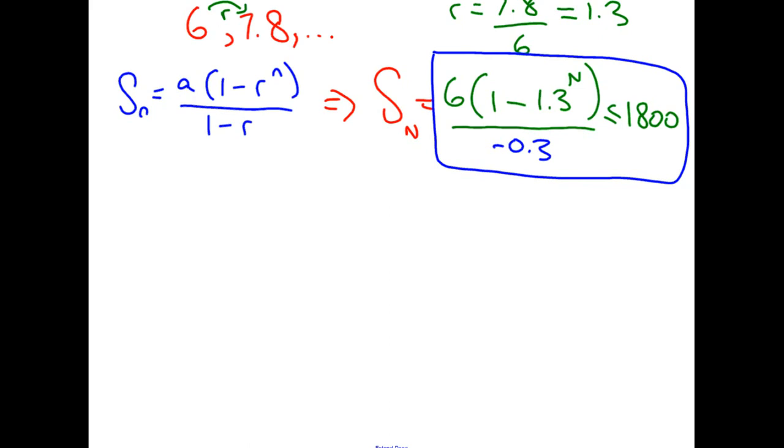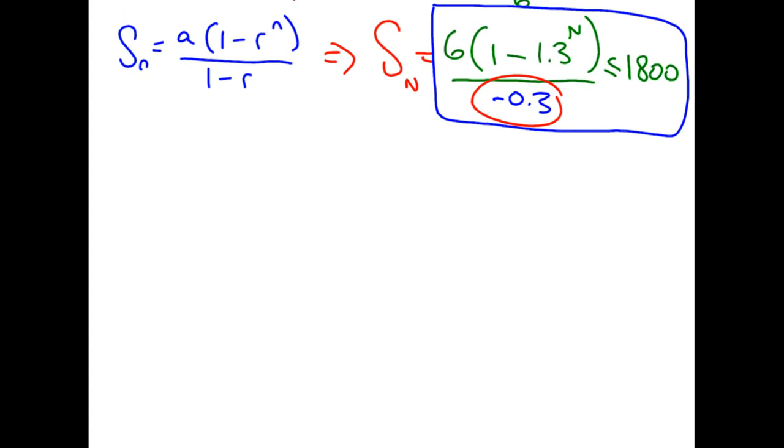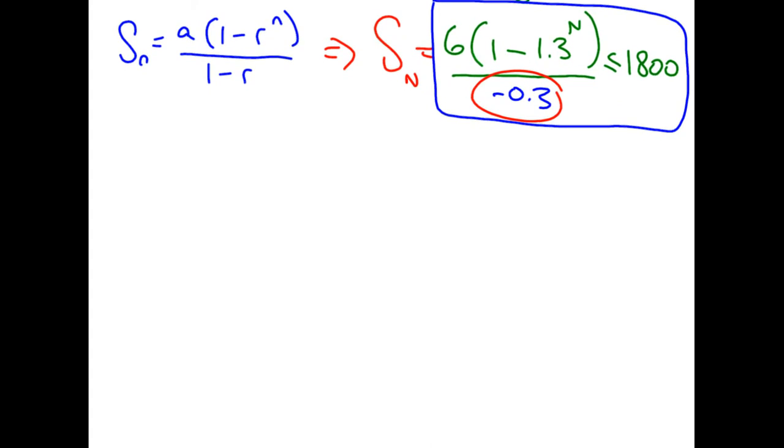So, first thing that we're going to want to do is times up by minus 0.3. Hopefully, you've been taught that if you want to times up by negative in inequality, you have to change the sign around. So we get 6, 1 minus 1.3 to the n is greater than, because we've swapped the sign around, 1,800 times by minus 0.3 minus 540.